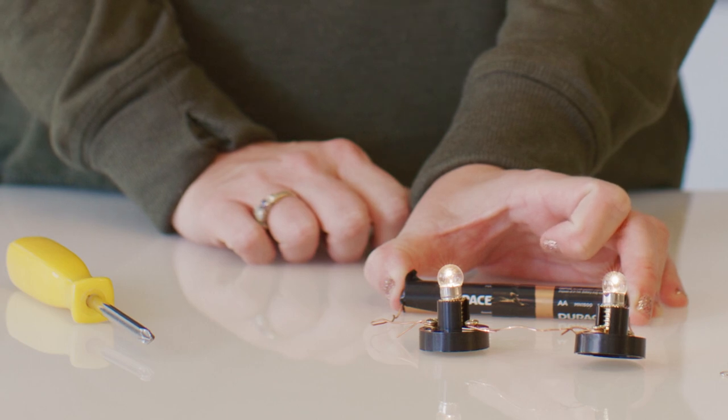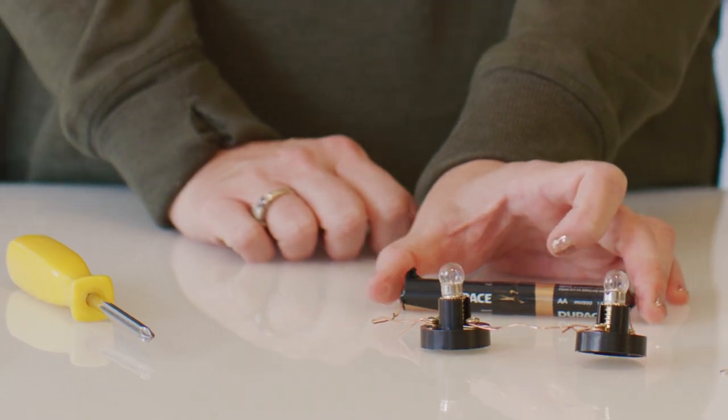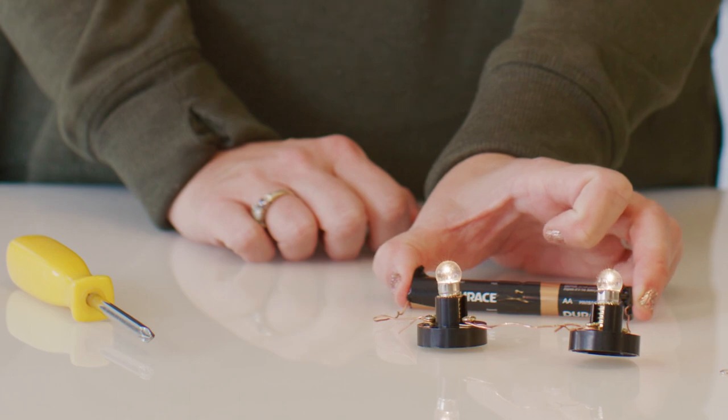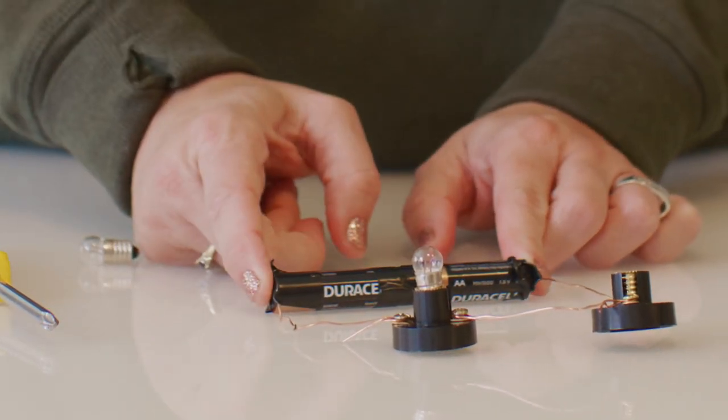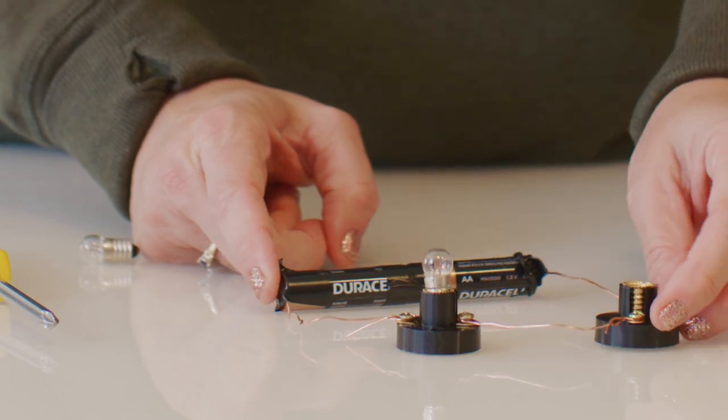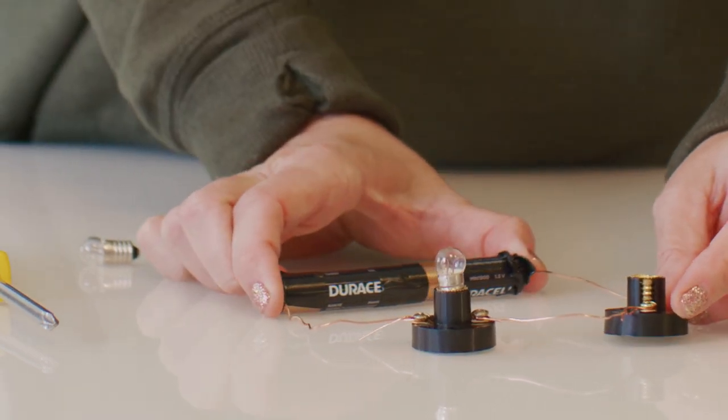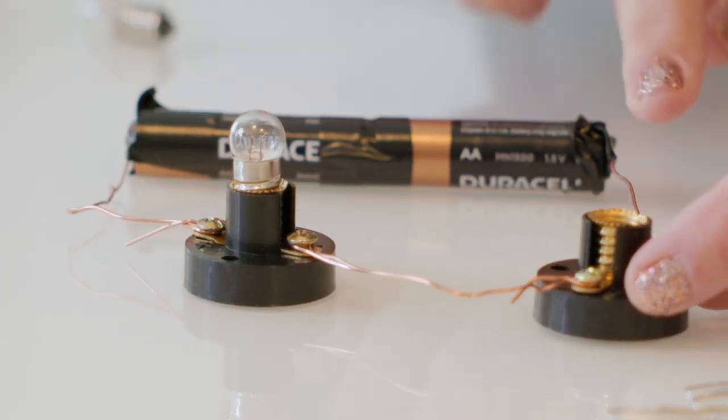Now that we have two batteries connected, if we unscrew one light bulb, what will happen? The energy will not flow to either bulb because this is still a series circuit, and the electricity is still flowing in one direction. With one bulb disconnected, the energy flow is stopped.